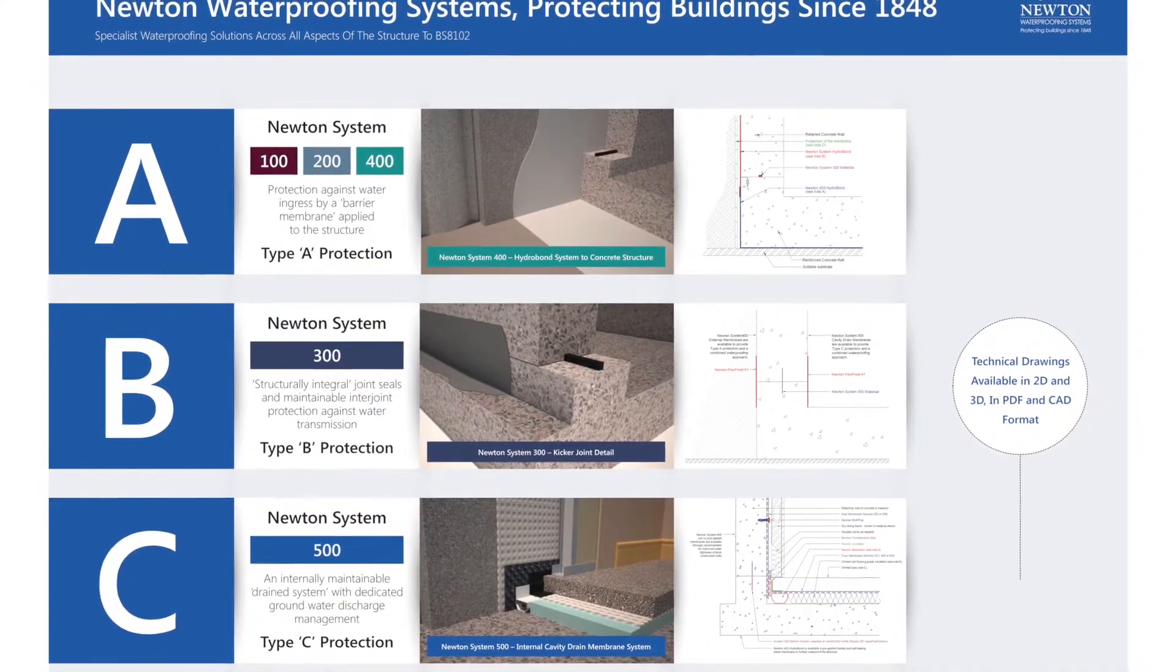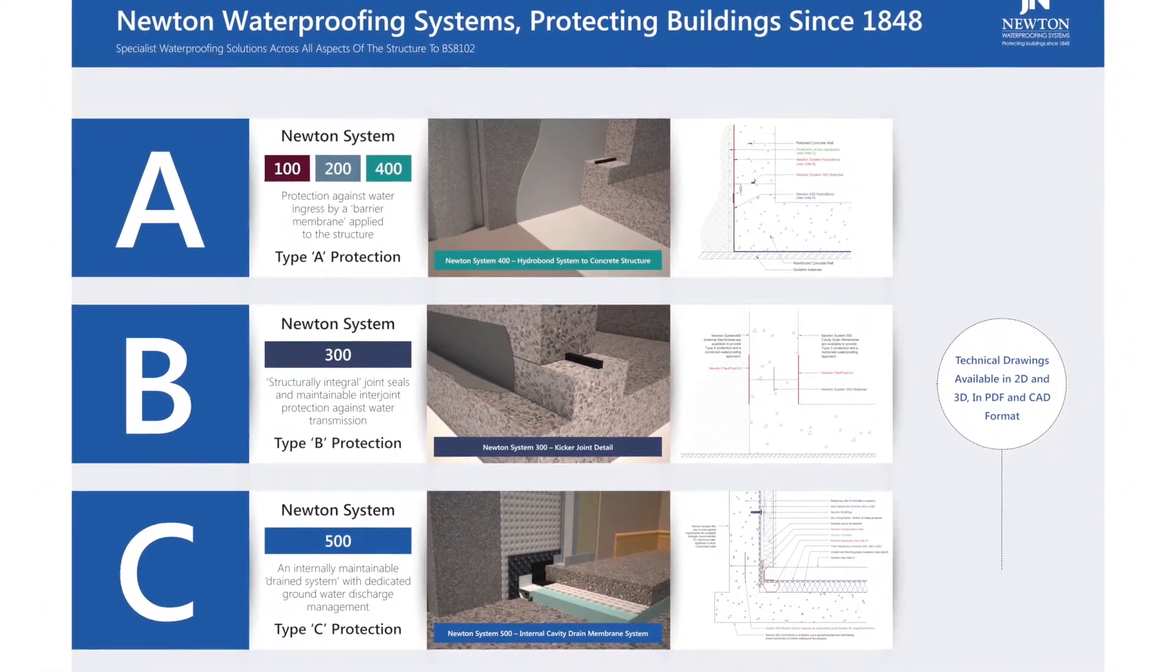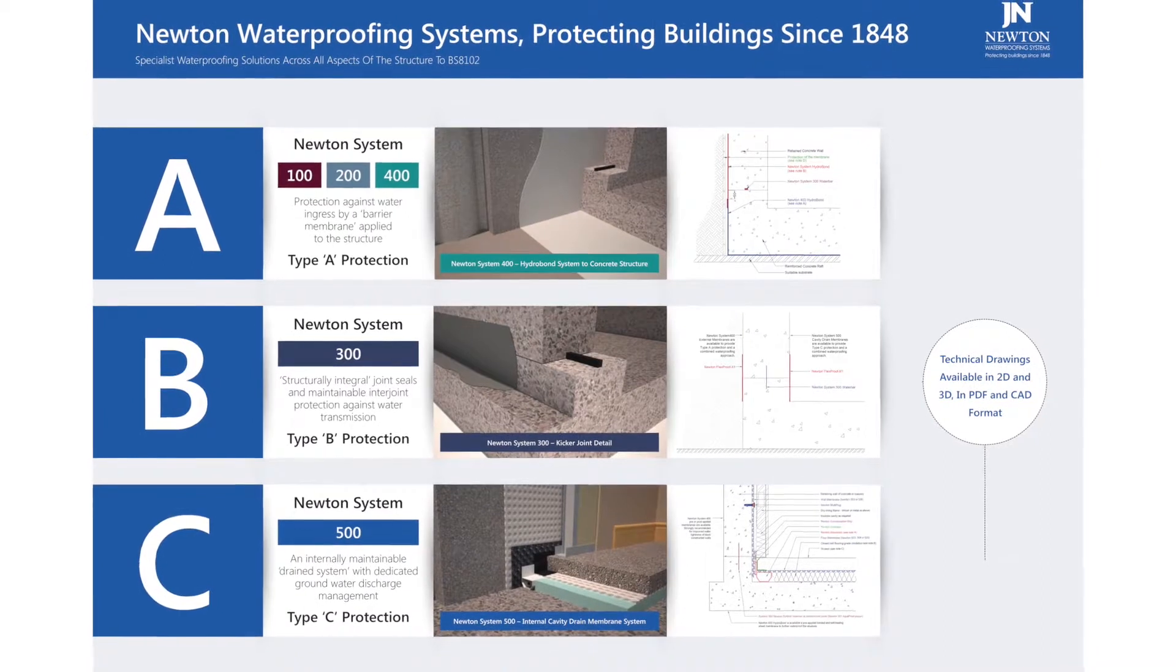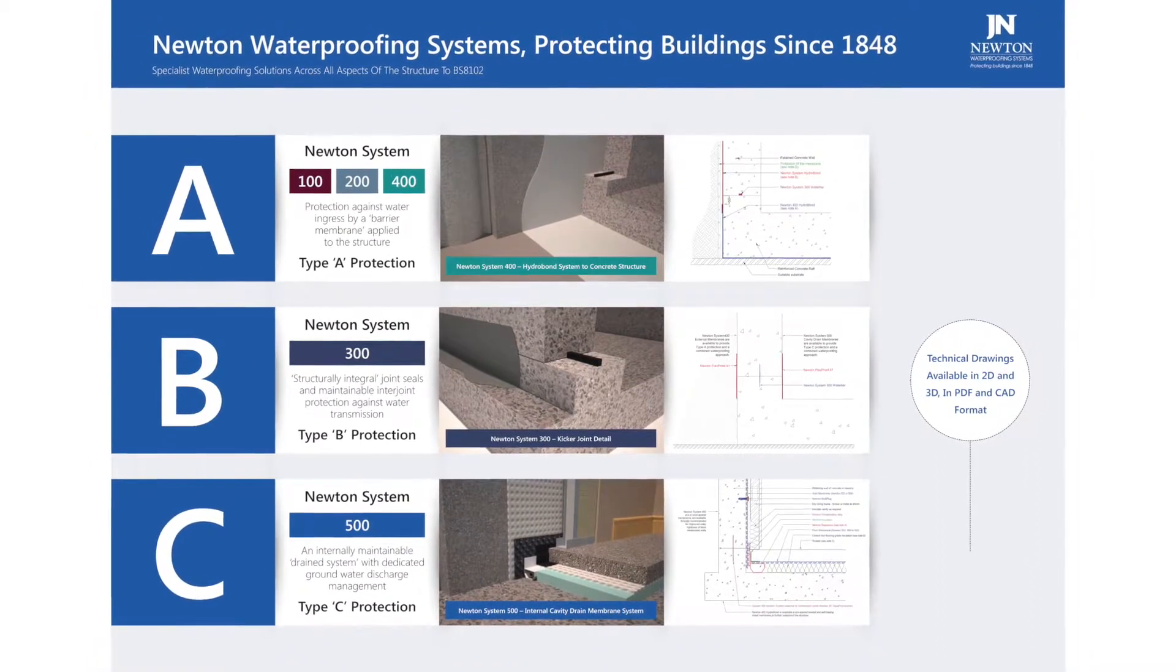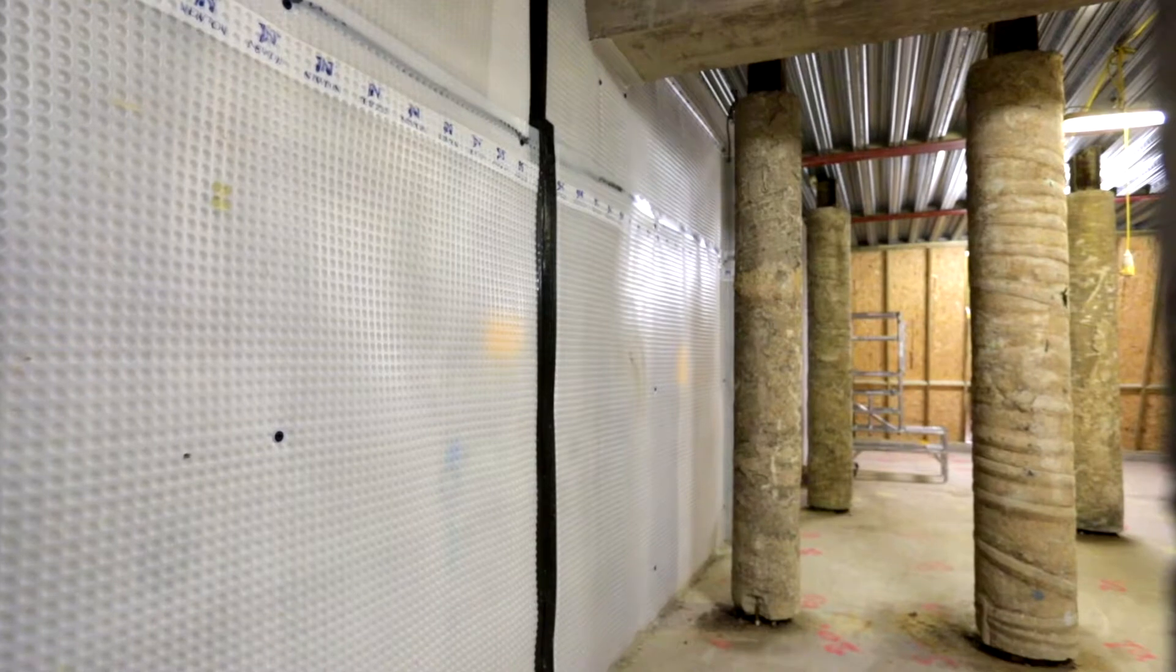That gives us three different systems to use: Type A, which is barrier or membrane system; Type B, where the structure itself is integrally waterproof; and Type C, which is drain protection.